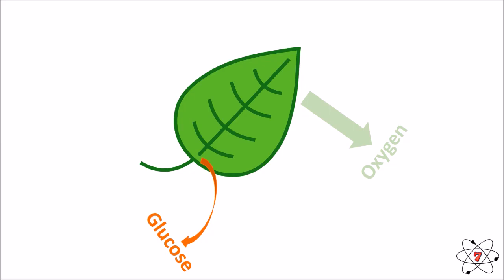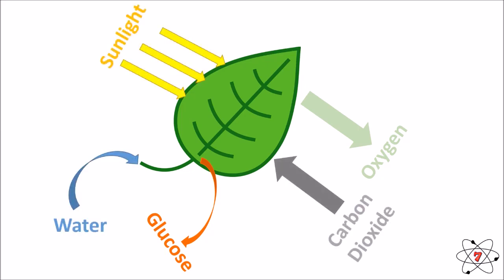Oxygen is also produced in photosynthesis as a waste product, and it exits the leaf through the stomata — the same holes that carbon dioxide entered through. So water and carbon dioxide are the raw materials we start with, and glucose and oxygen are the products. Sunlight merely provides the energy that allows this reaction to happen.